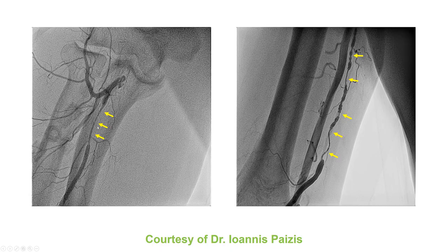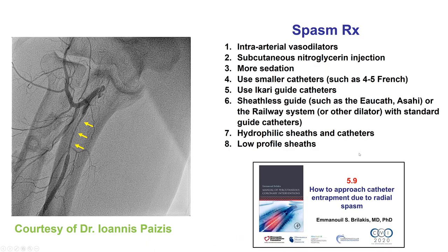These are examples of severe radial spasm. There is a specific video, 5.9, that discusses treatment and prevention of spasm, which includes vasodilators as the first step, good sedation, using smaller catheters or dimple surface catheters, or sheathless guides in the case of PCI.